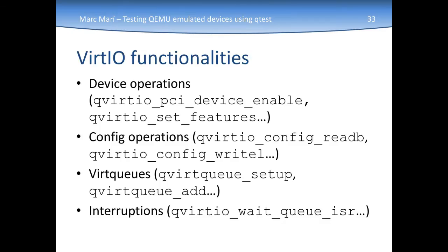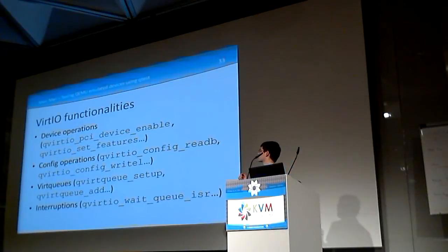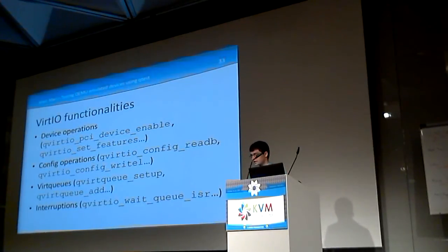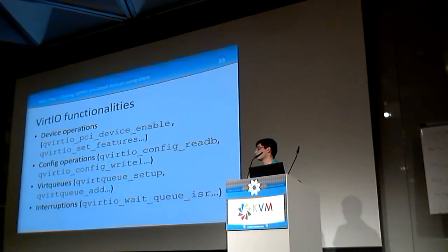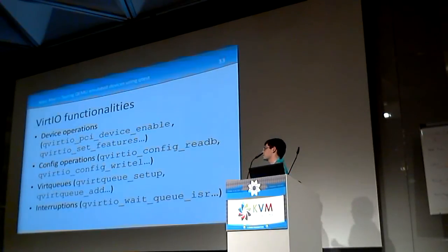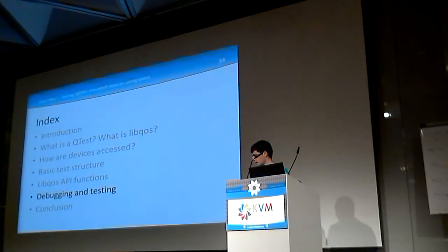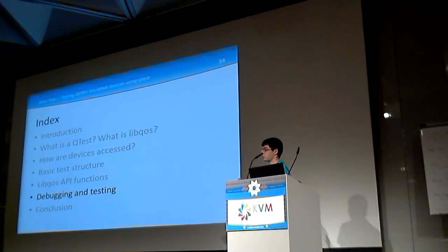There's a LibQOS for VirtIO, which is what I've been mainly working on this summer. It's currently implemented for PCI and is expected to support MMIO in a short time. You can add devices, remove devices, do configuration operations, work with VirtQueues — adding elements, removing elements — and also check interruptions.